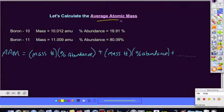In order to calculate the average atomic mass of an element, we need to take into consideration their percent abundances. Meaning, how often does each isotope occur in nature?